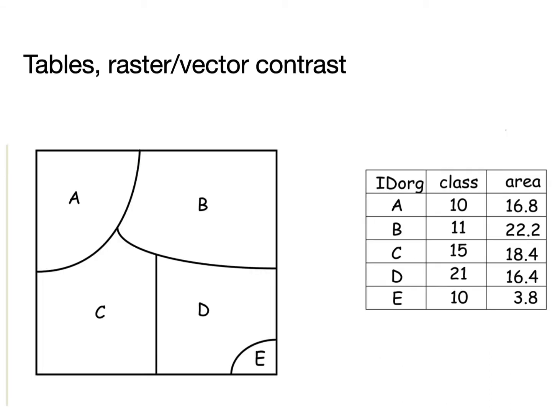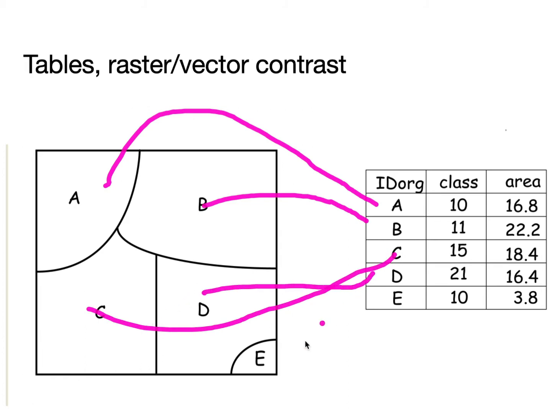Raster and vector models often have the same form in the sense you have geographic data and a table, but the tables are often constructed differently. Often with vector models, usually with vector models, you have this one-to-one relationship between features. So there's one polygon for each of the rows in an associated table.